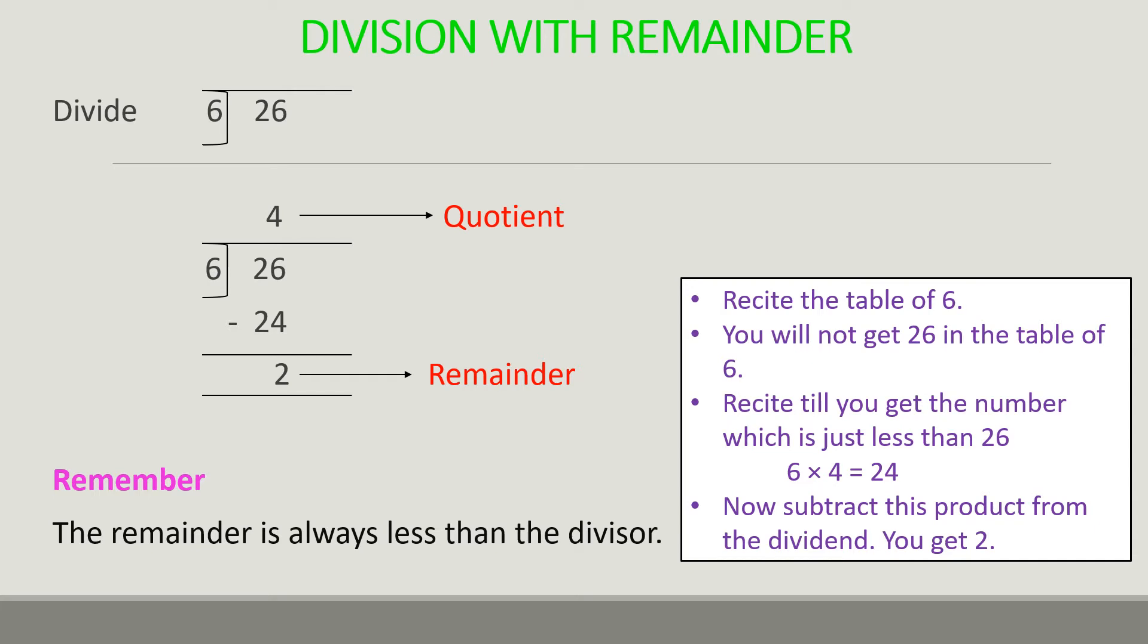You will not get 26 in the table of 6, so recite till you get the number which is just less than 26. So 6 fours are 24, so we write here 24. Now subtract this product from the dividend. 26 minus 24 equals 2.